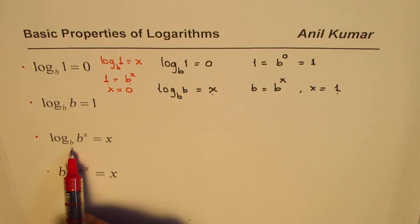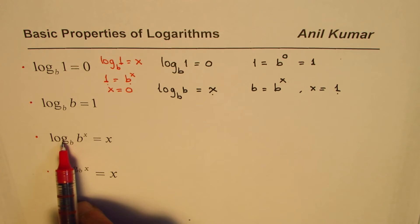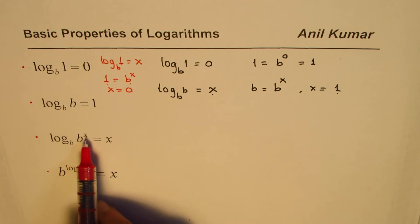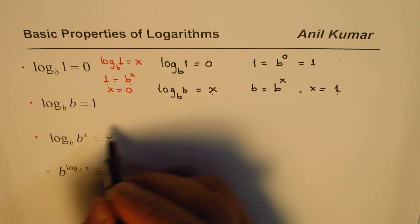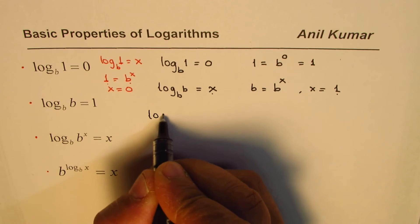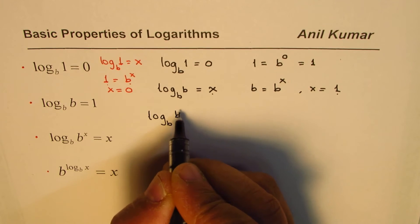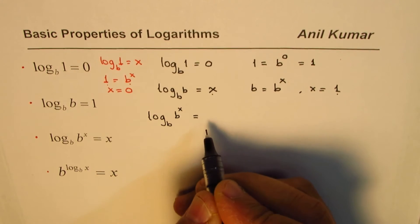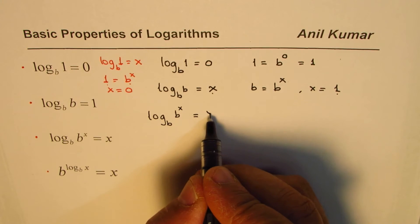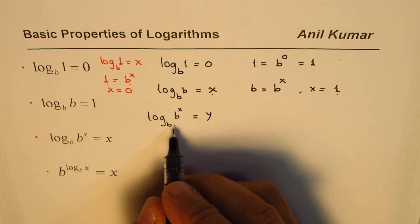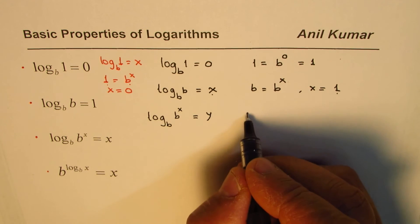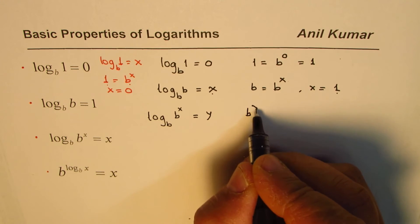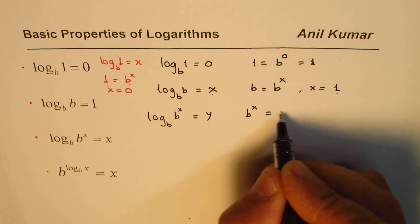Now for the next property, we have log to the base b of b to the power of x. To prove this, let log_b(b^x) equal some number y. If I write it in exponential form, I get b to the power of x equals b to the power of y.